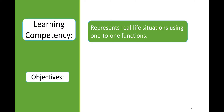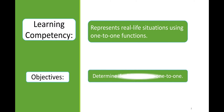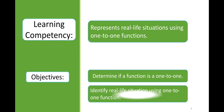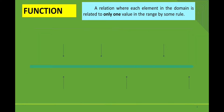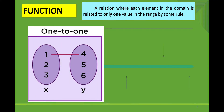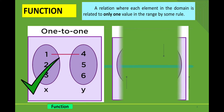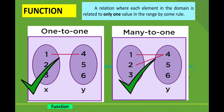At the end of this lesson, you are expected to determine if a function is one-to-one and identify real-life situations using one-to-one functions. In our previous lesson, we discussed that a function is a relation where each element in the domain is related to only one value in the range by some rule, and one-to-one relation is a function. Also, many-to-one relation is also a function.